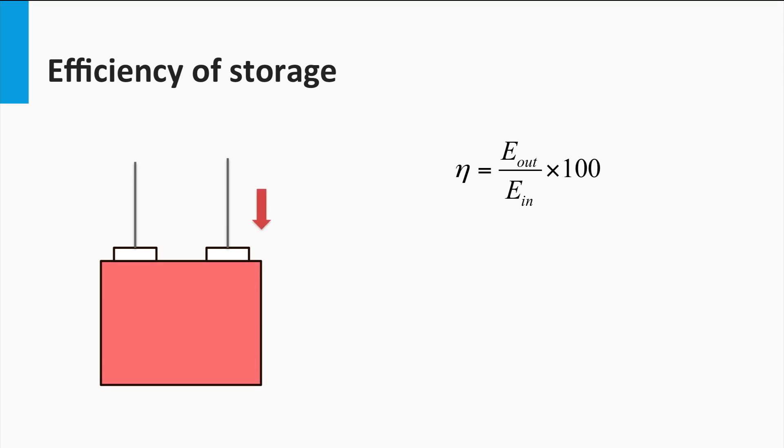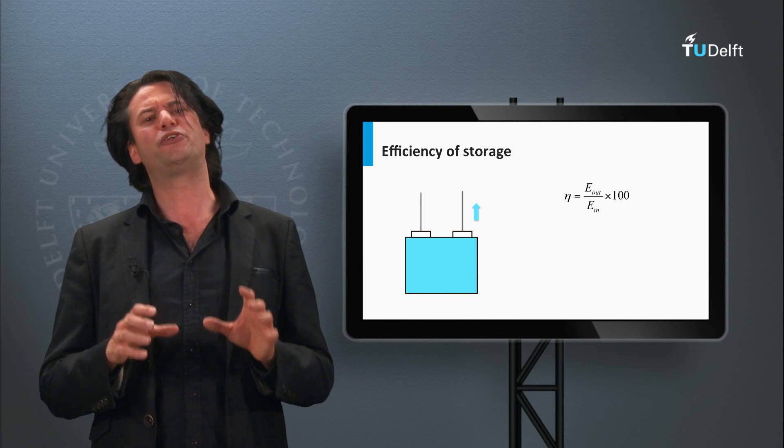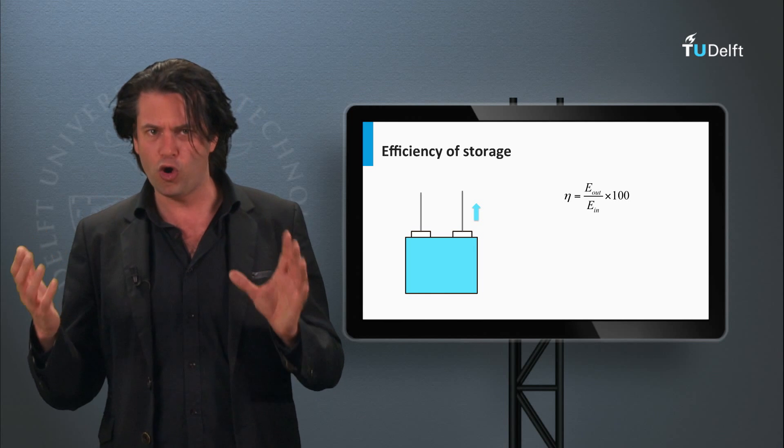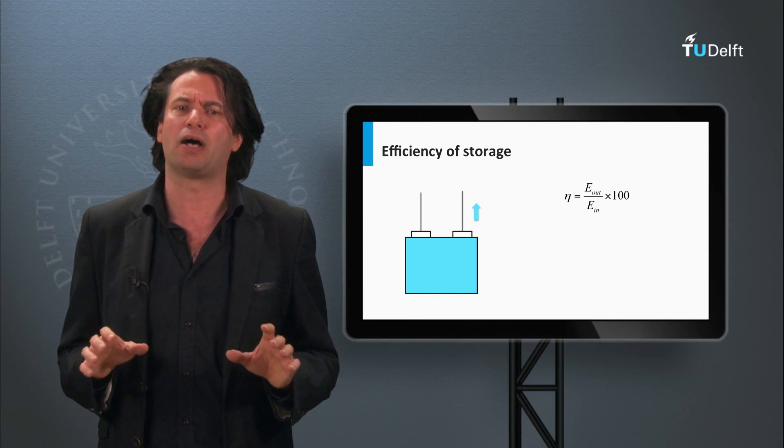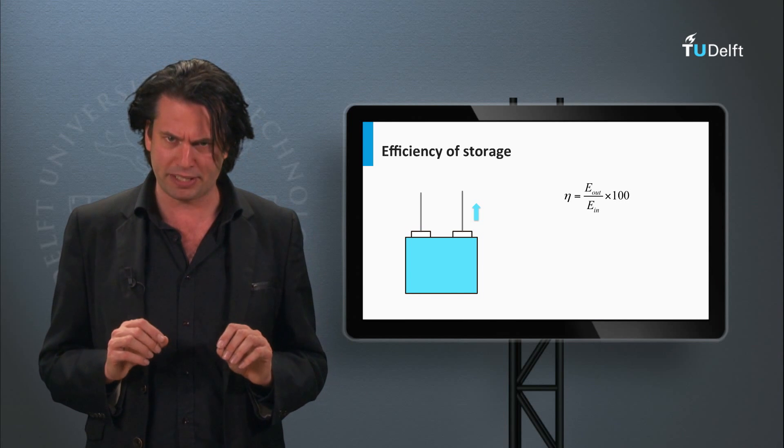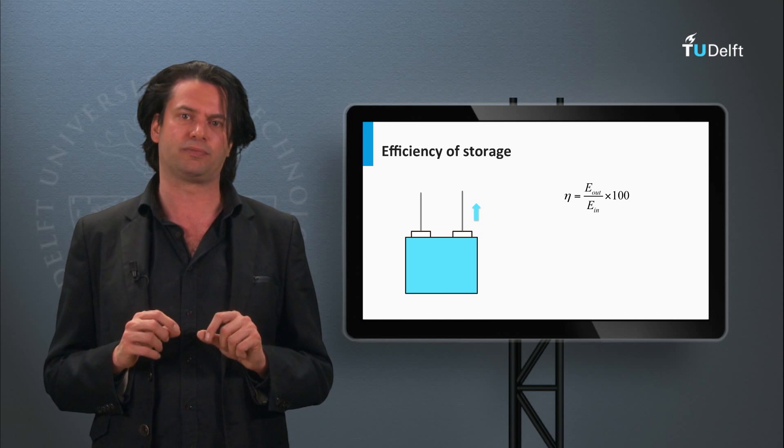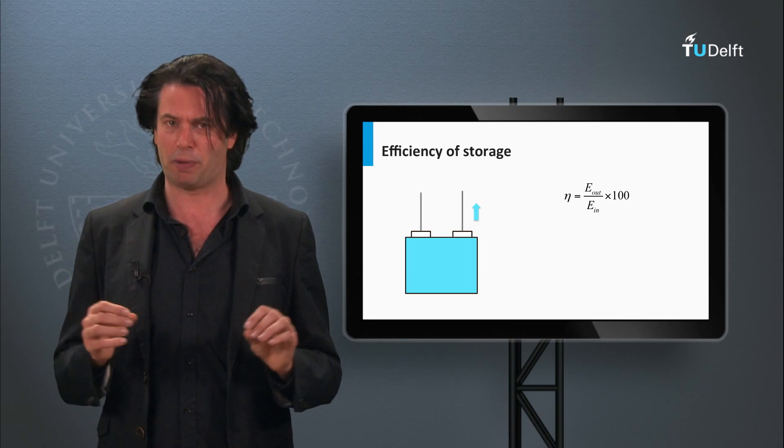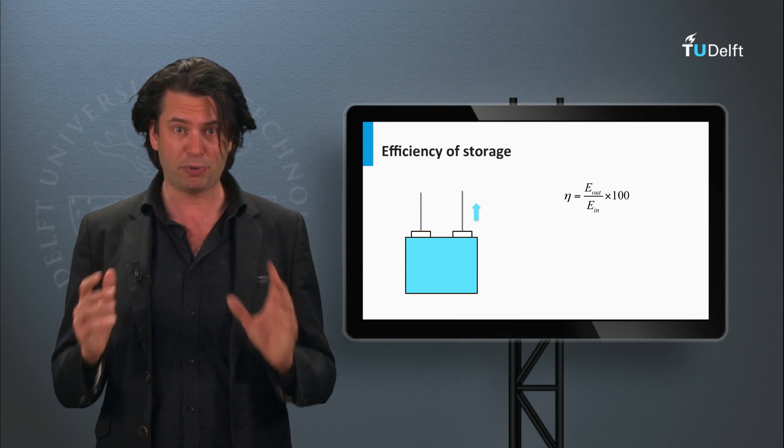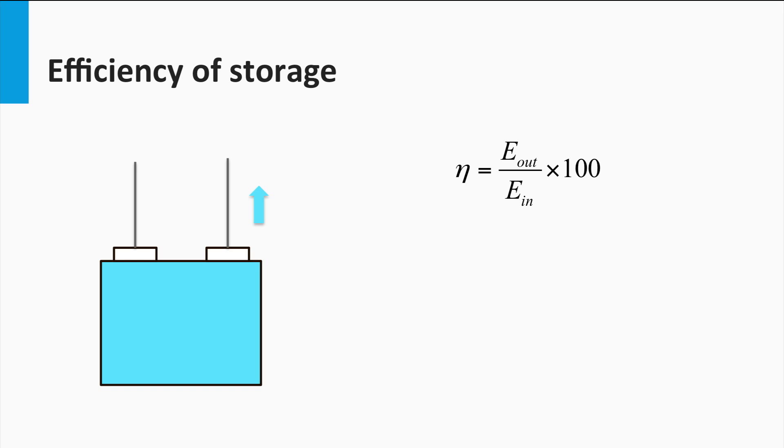Like every other component in the PV system, the efficiency of the storage system is also of high importance. In the last video you saw how we selected battery from a host of other storage choices. We said that the batteries, apart from the ease of implementation, offer some of the highest efficiencies. Usually, for storage technologies we talk about round-trip efficiencies. In simple terms, it is the ratio of total storage system input to the total storage system output.